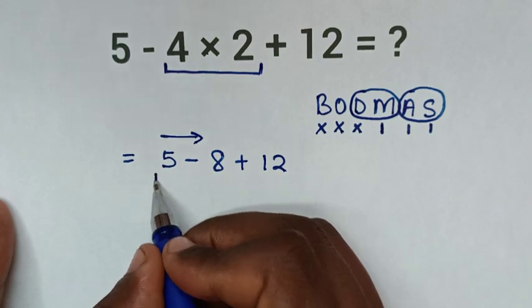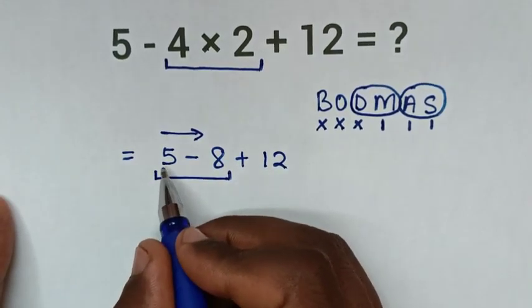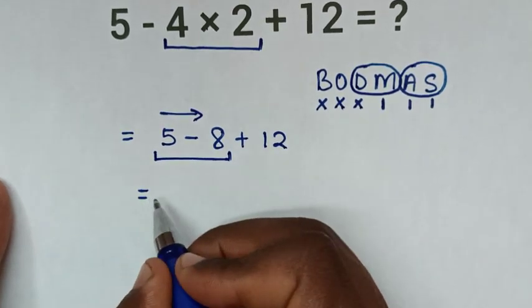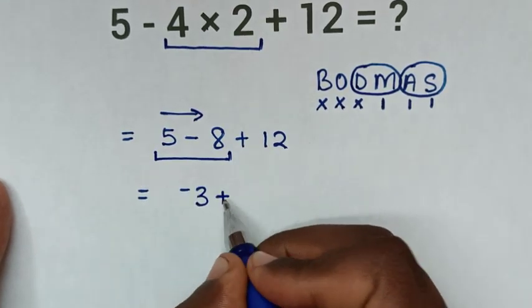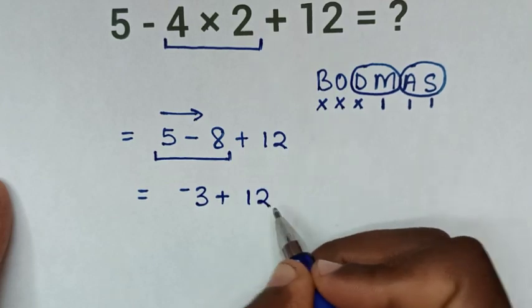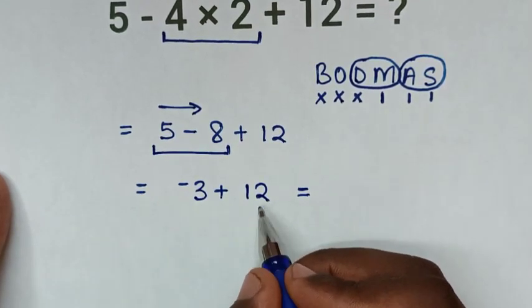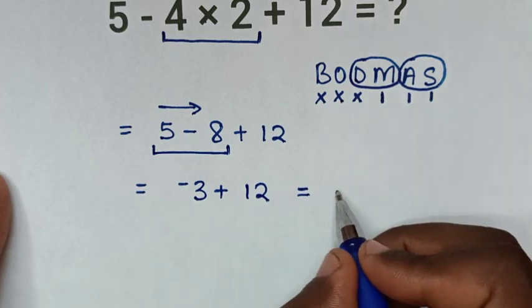We start with the subtraction of 5 minus 8, which is negative 3. So it will be equal to negative 3 plus 12, which is the same as 12 minus 3, which is 9.